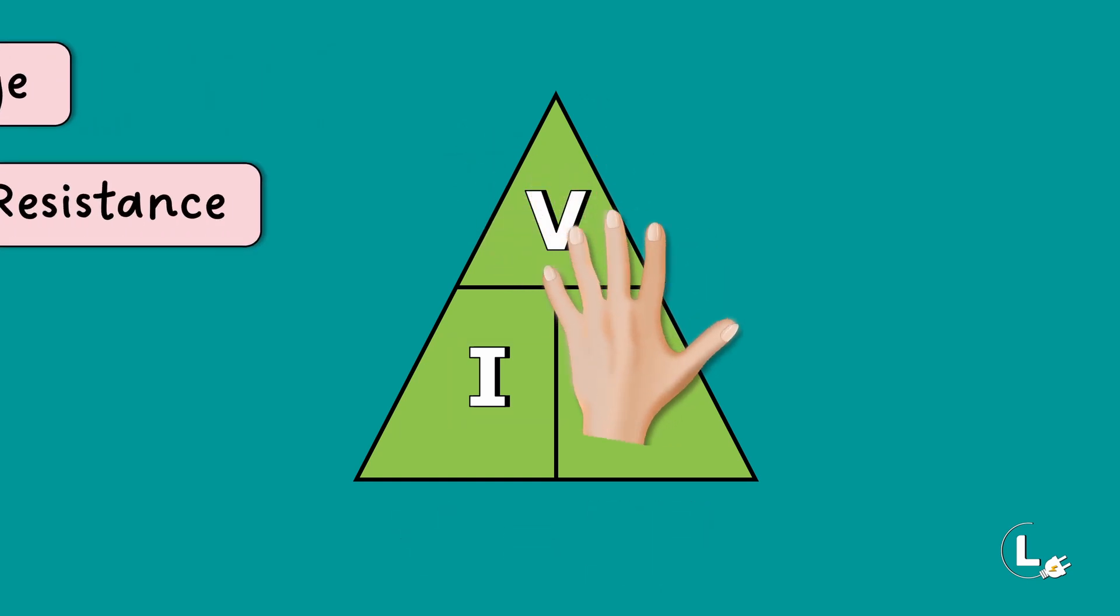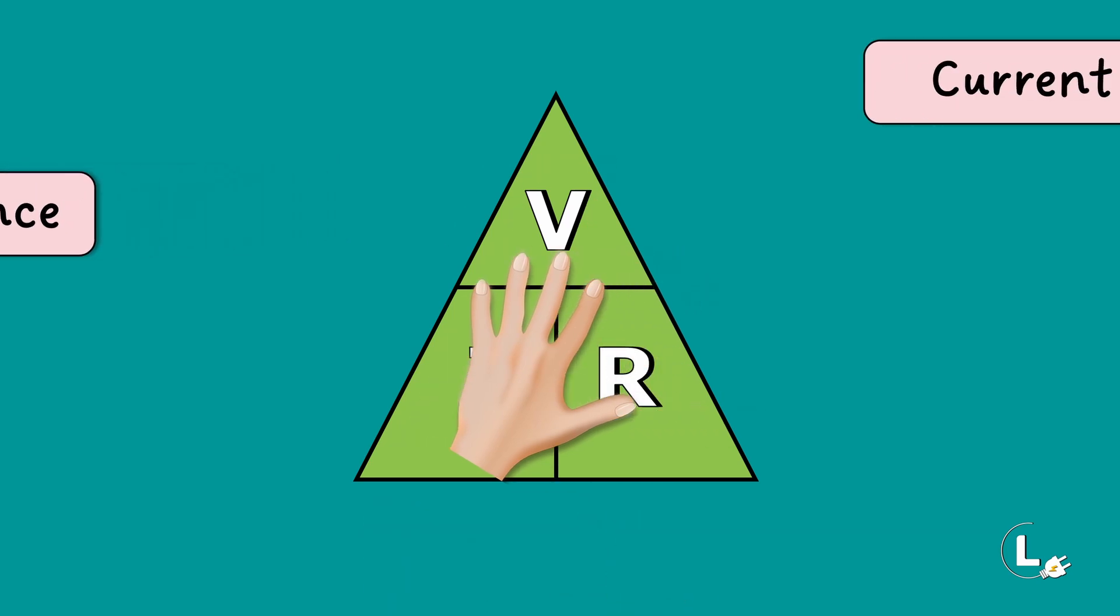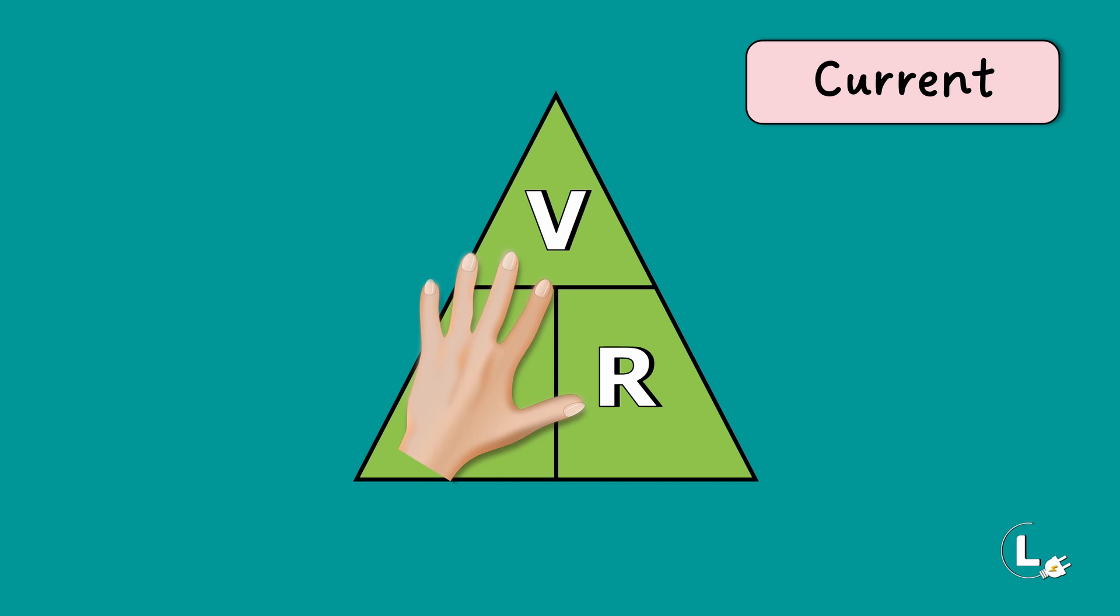Similarly, to find resistance, we have to cover the letter R. This gives V divided by I. To find the current, we have to cover the letter I. This gives V divided by R.